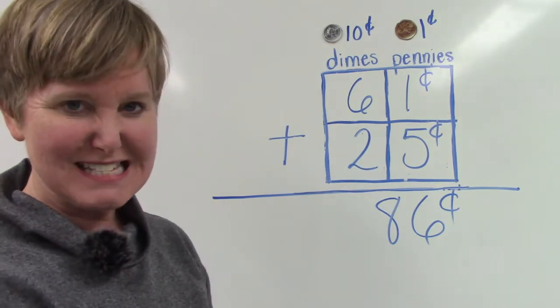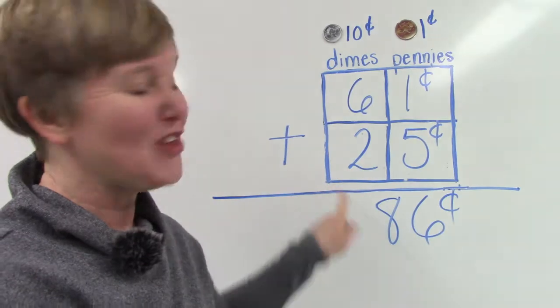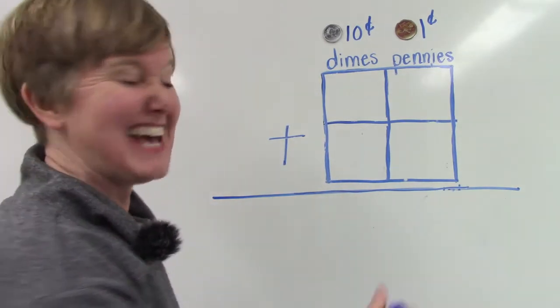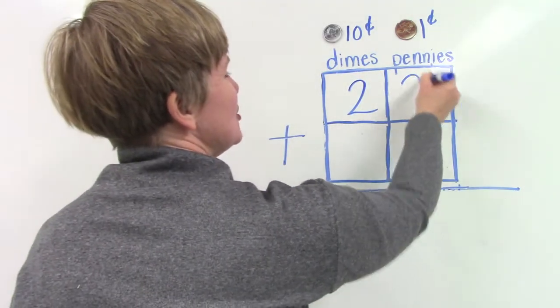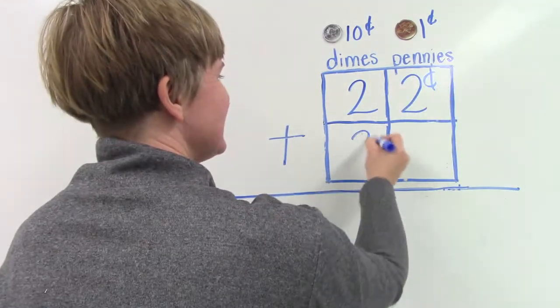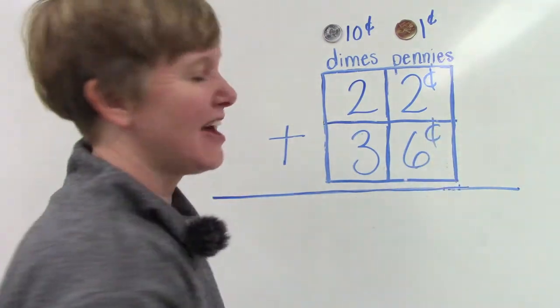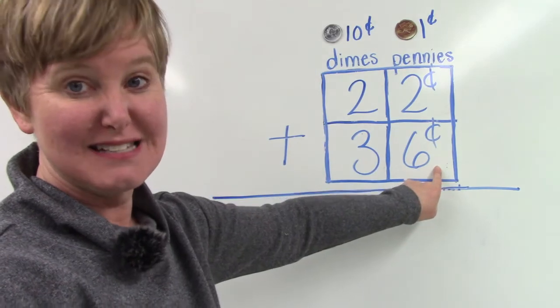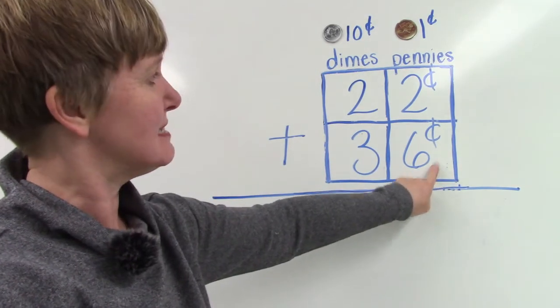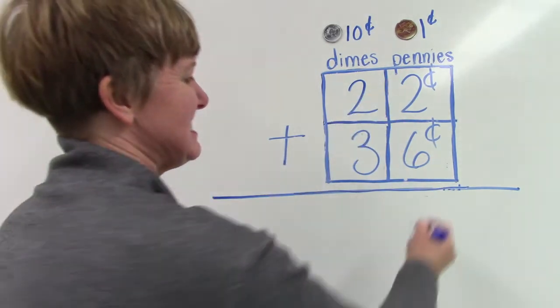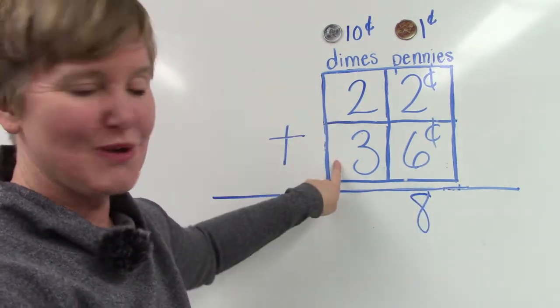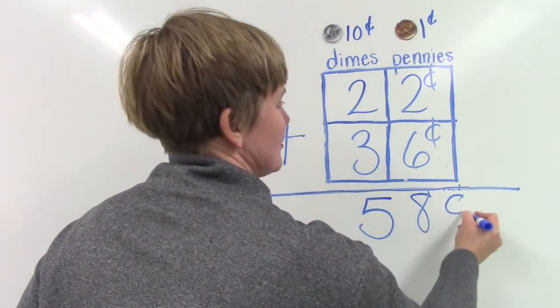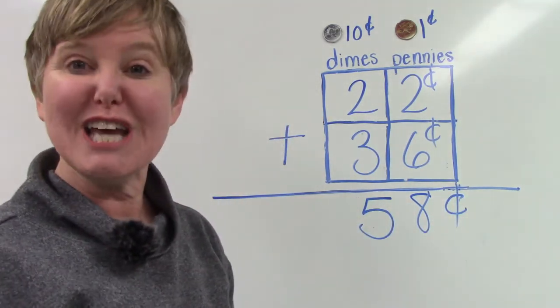When you're adding these numbers together, you can make a little graph like this as well. Try another one with me. All right, let's add twenty-two cents plus thirty-six cents. Just like all of the other times, we're going to start over here on the ones place. Six plus two. Six, seven, eight. And then we have three plus two. Three, four, five. Twenty-two plus thirty-six is fifty-eight cents.